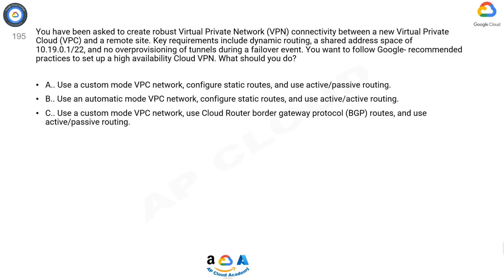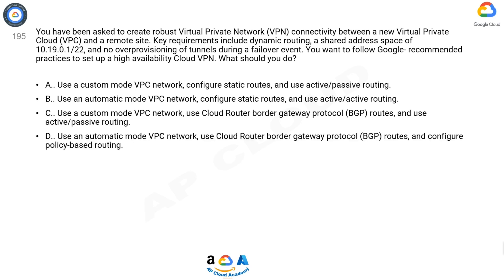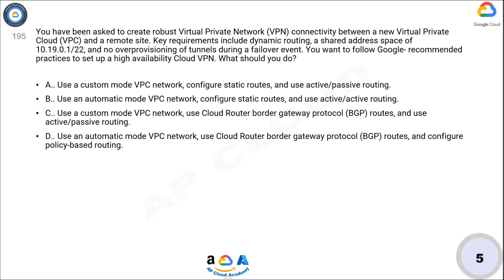Option C: Use a custom mode VPC network, use Cloud Router Border Gateway Protocol (BGP) routes, and use active/passive routing. Option D (most voted): Use an automatic mode VPC network, use Cloud Router BGP routes, and configure policy-based routing. Now think for five seconds for the correct answer.